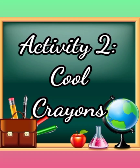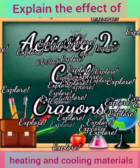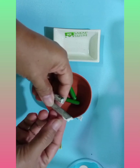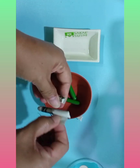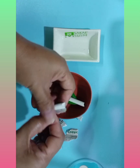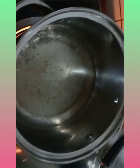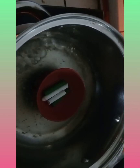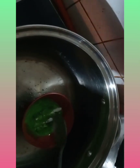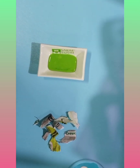Let us now proceed to Activity 2. In this activity, you will explain the effect of heating and cooling solid materials. Activity 2: Cool Crayons. We will use crayons to see the effect of heating and cooling. First, remove the paper wrap from the broken pieces of crayons. Heat water in a casserole and add the broken pieces of crayon to a heatproof bowl. Let the crayon melt completely, stirring with a spoon as needed. Remove the casserole from the flame, put the melted crayon in the molds, and let the melted crayons cool down for a few hours.